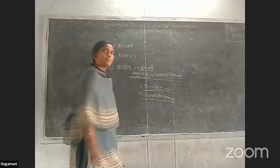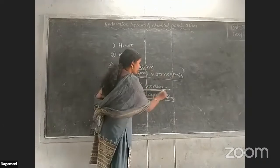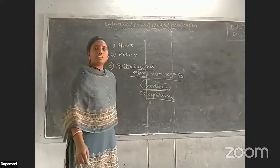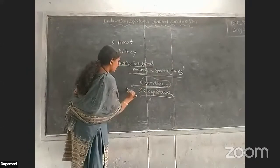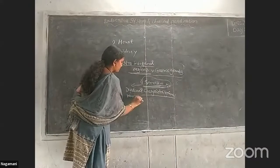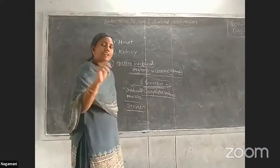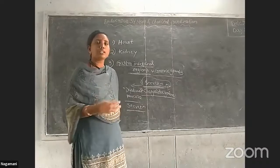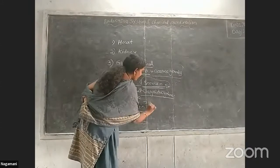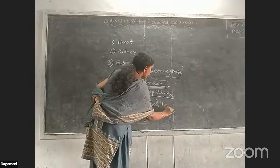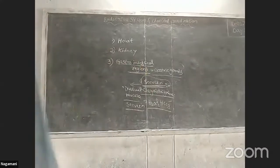Secretin was the first hormone coined by scientists. It is released from the duodenal mucosa. When released from the pancreatic-duodenal region, it works on the reabsorption of water molecules and bicarbonate ions. That is the importance of secretin.